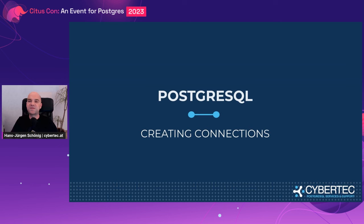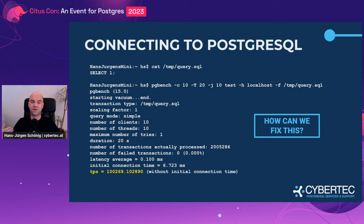Let's start with something very simple. Let's have a journey through an application. It starts with creating a connection. Let's take a look at this slide. We have a simple query — select 1 — the most trivial query you can imagine. What we do here is run this query for 20 seconds with 10 connections to this database, a localhost connection. What Postgres does on my Mac Mini is give us 100,000 transactions per second.